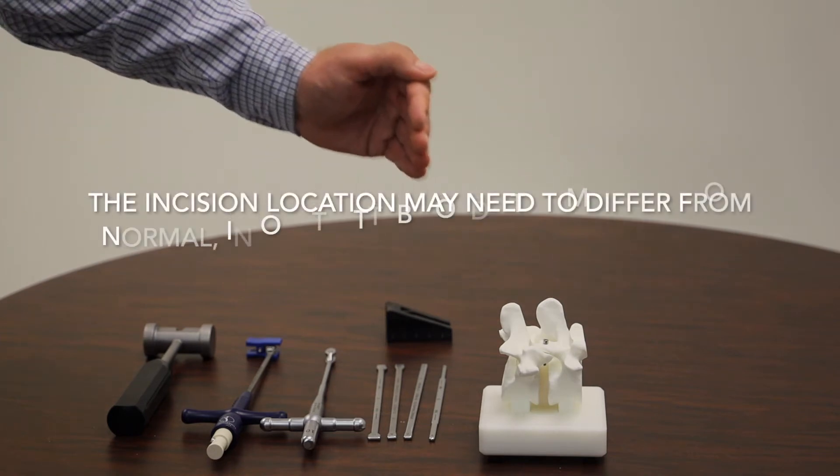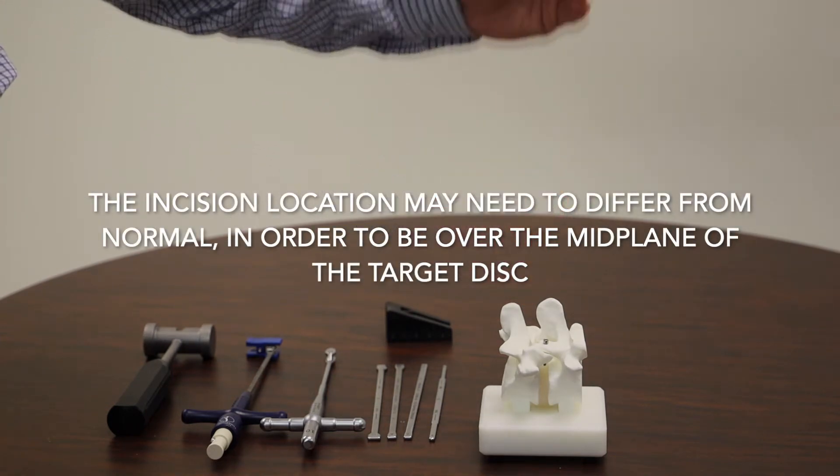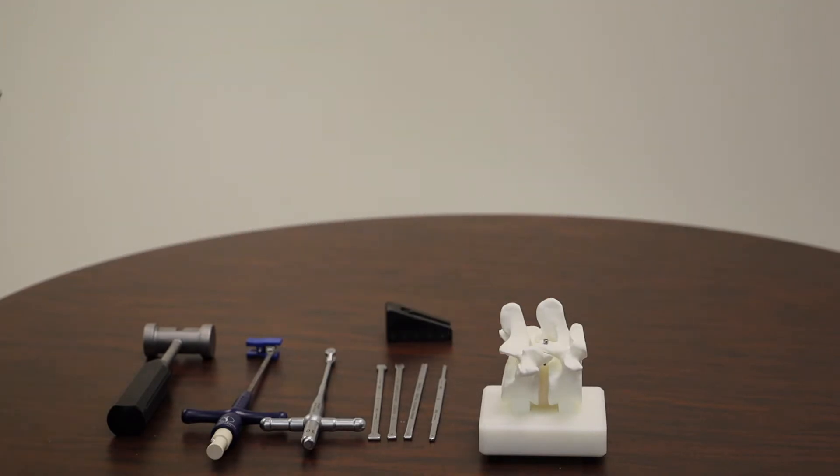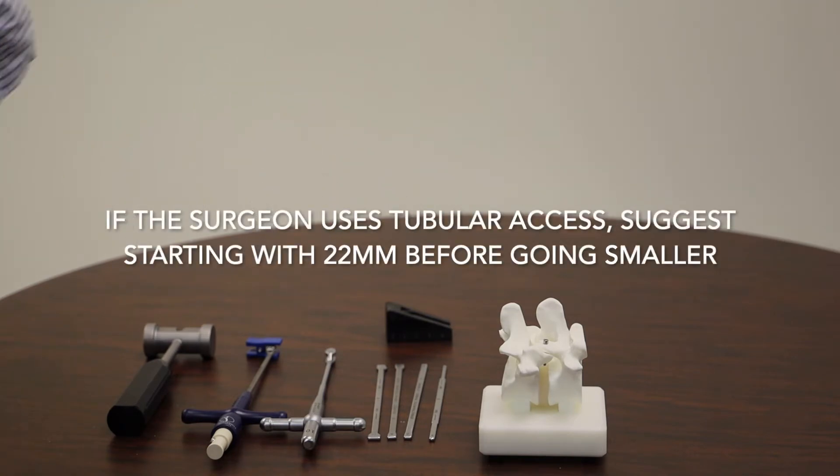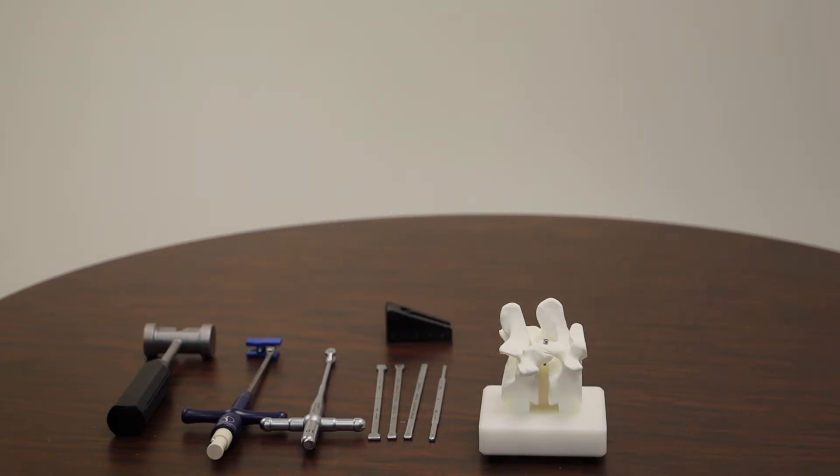The incision needs to give you access to either end plate and should be made just over the mid plane of the target disc. This is one to two centimeters cranial to your normal incision. If you use tubular retraction, I would like to ask you to start with a 22 millimeter to give you easy access until you become more comfortable with the procedure.